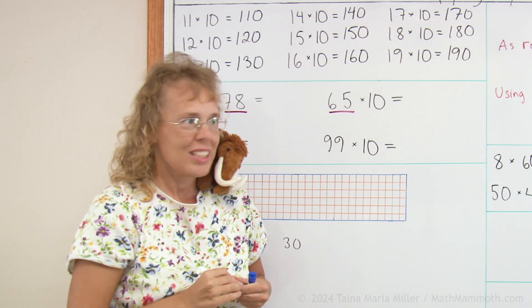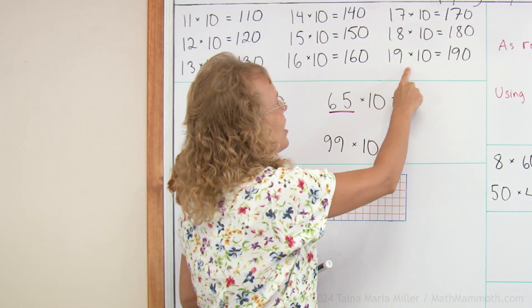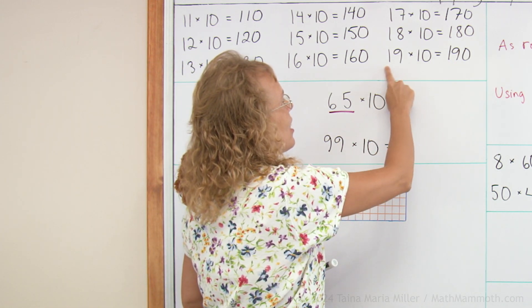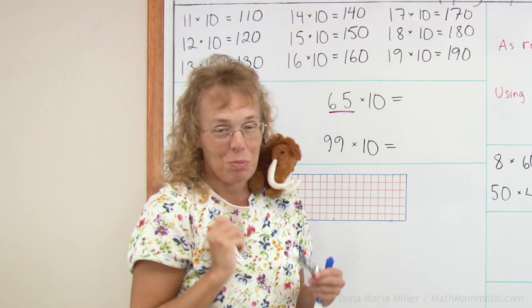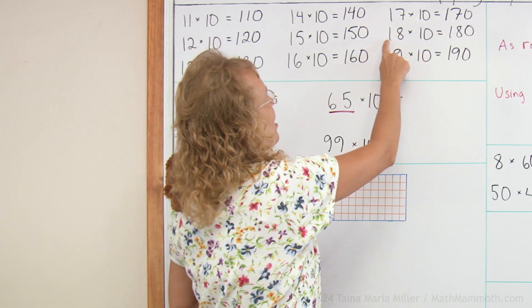What I want you to notice is that here 19 times 10, we have 190. It's like the 19 is here too but with a zero added, so to speak. And the same here, 18, 18.